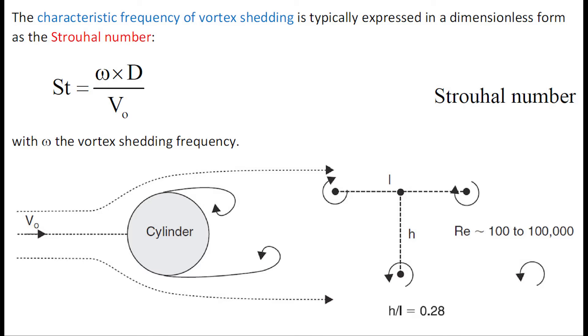The characteristic frequency of vortex shedding is typically expressed in a dimensionless form as a Strouhal number, equal to omega times d over v0, where omega is the vortex shedding frequency, d is the cylinder diameter, and v0 is the approach flow velocity.